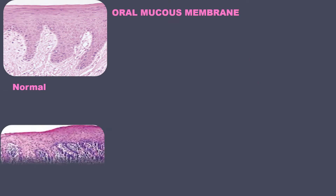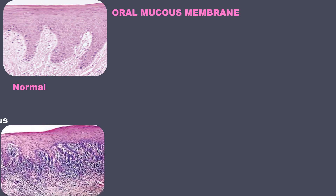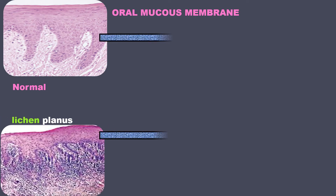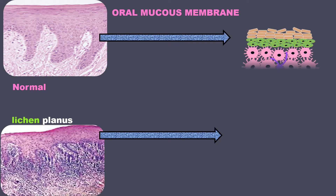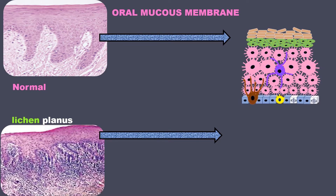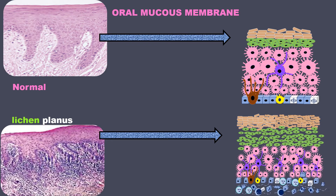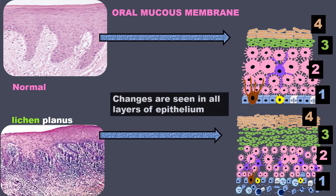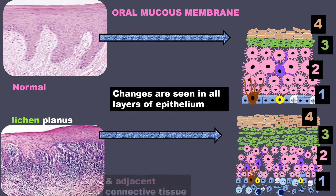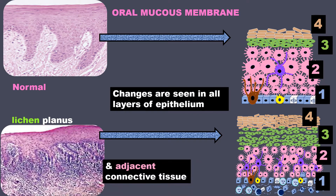Under the microscope, this is how a normal oral mucous membrane looks like, and below its appearance in lichen planus. You can see that there are changes in both the images. When you take a closer look at the epithelial cells, you can find changes in all the layers of epithelium and also changes in the connective tissue.